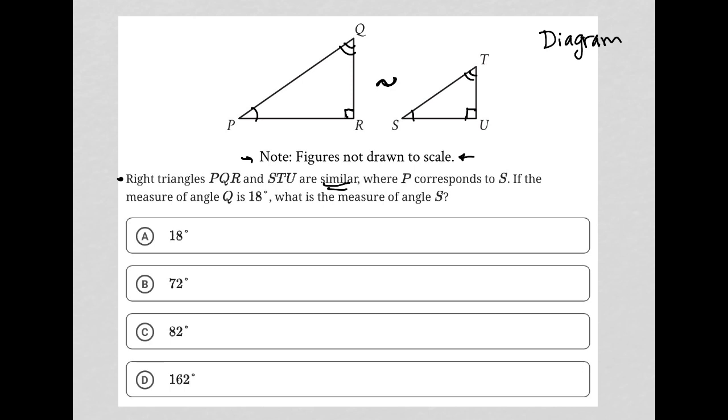Where P corresponds to S, it says. So we knew that. If the measure of angle Q is 18 degrees, so this is 18, that makes this 18.